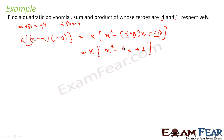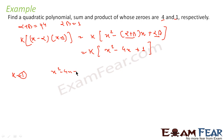Substituting, we get x² − (α + β)x + αβ = x² − 4x + 1. If we put k = 1, this equation becomes x² − 4x + 1.